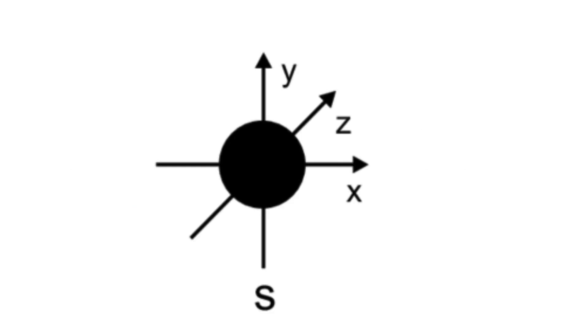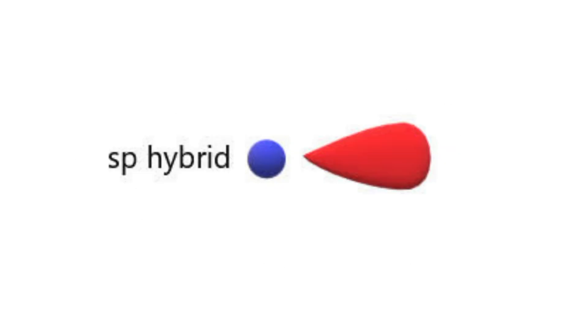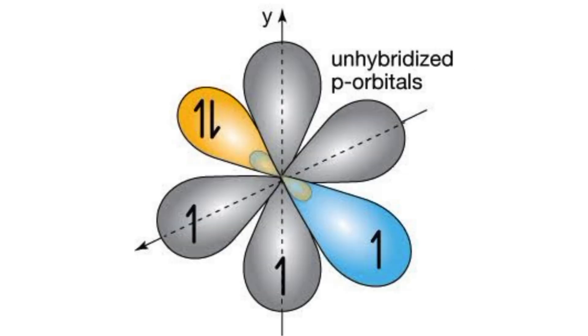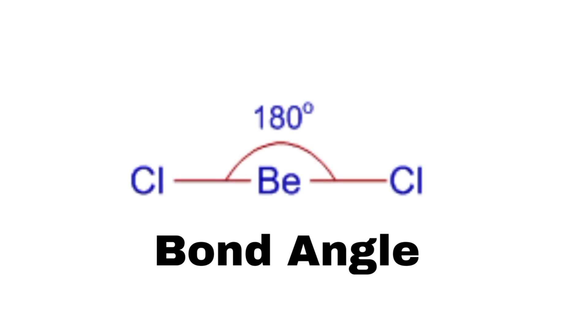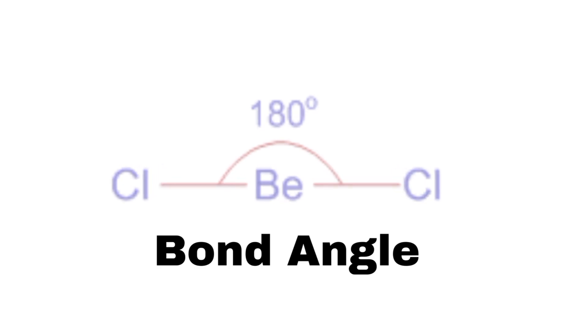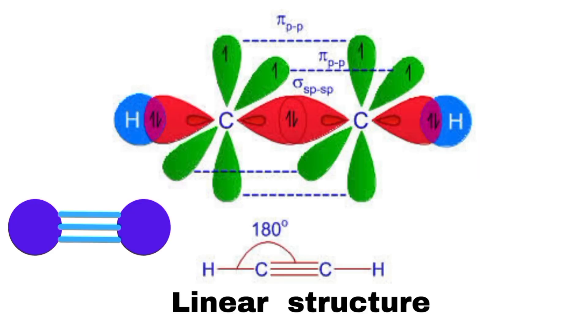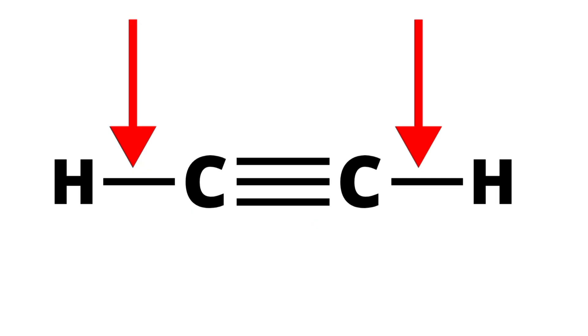In sp hybridization, one s orbital mixes with one p orbital from the same atom to form two equivalent sp hybrid orbitals. The remaining two p orbitals remain unhybridized. The two sp hybrid orbitals arrange themselves linearly to minimize electron pair repulsion, leading to a bond angle of 180 degrees. In acetylene, each carbon atom is sp hybridized, forming a linear structure with a triple bond between the carbons and a single bond between carbon and hydrogen.